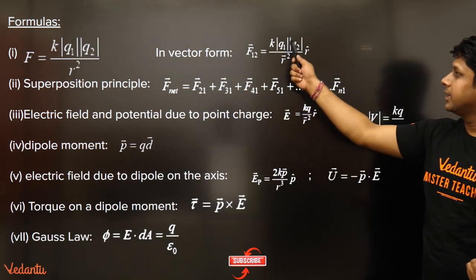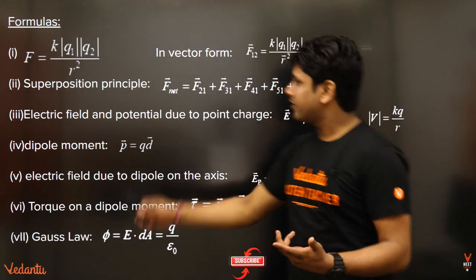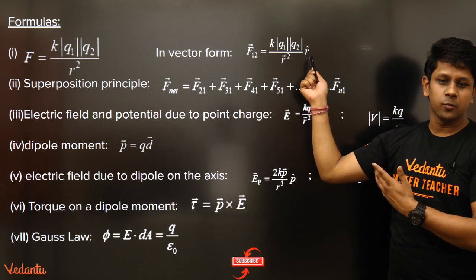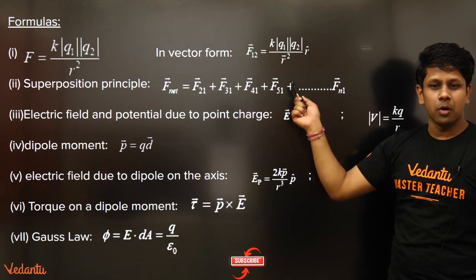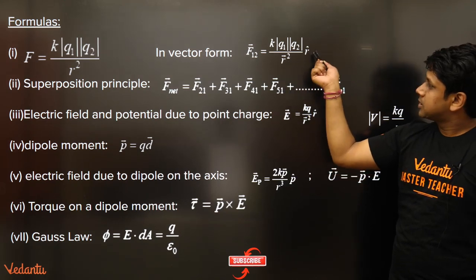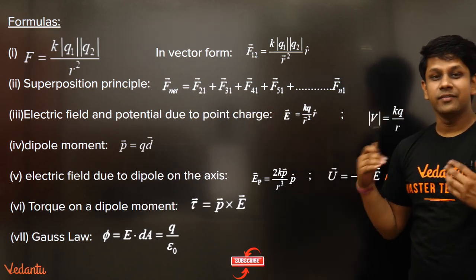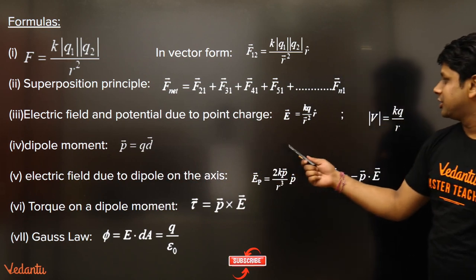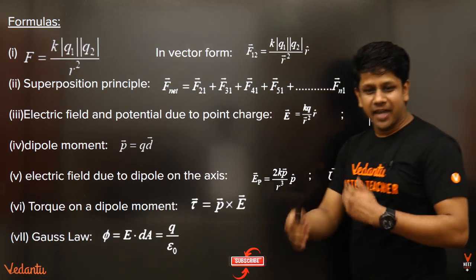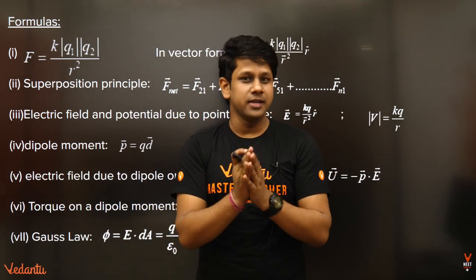The vector form of this formula is F = KQ₁Q₂ × (R̂ / R³), or equivalently KQ₁Q₂ × (R⃗ / R³). The unit vector is any vector divided by the magnitude of that vector, so R̂ = R⃗ / |R|, giving the cube in the denominator.